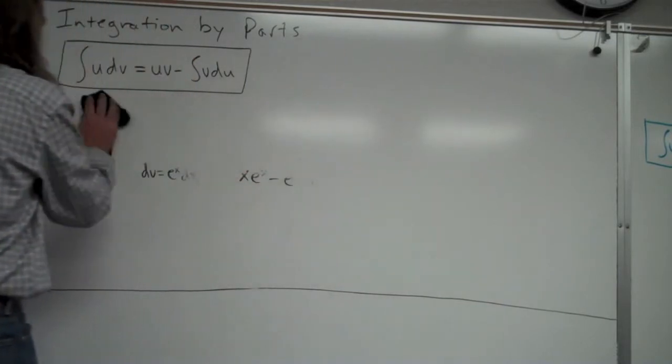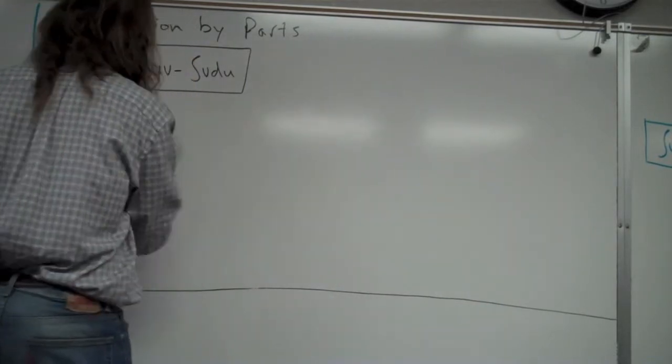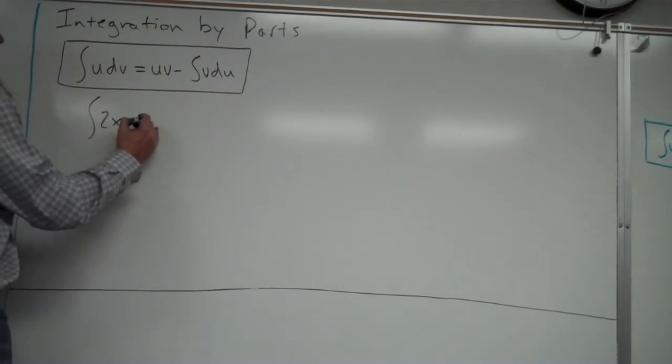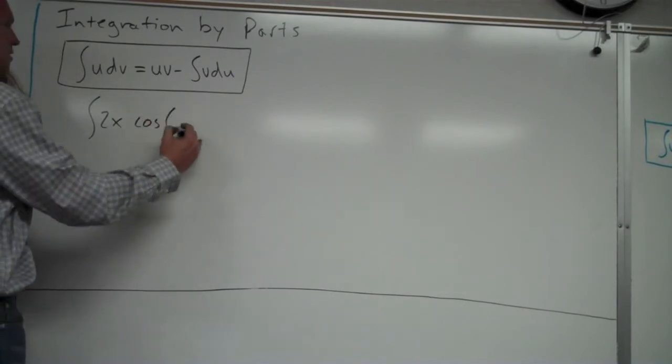All right. I'm going to take a look at another example here. And we'll change gears a little bit and go 2x cosine of 5x.